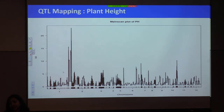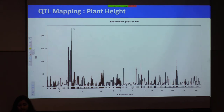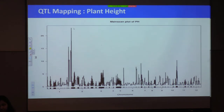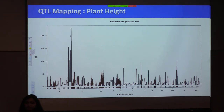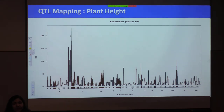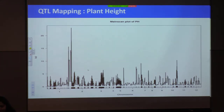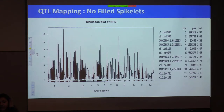Moving to QTL mapping: I got very good QTLs with LOD values above 20 for plant height. A LOD value of 3 or above is considered a good QTL — meaning the gene is likely located in that region. In chromosome 1, I got LOD values more than 20. There is also the sd1 semi-dwarf gene known to be on chromosome 1, and I will verify whether this QTL position matches that gene — which would be a very good result. For number of filled spikelets, I got good QTLs on chromosome 2 (around LOD 7) and also on chromosome 1.